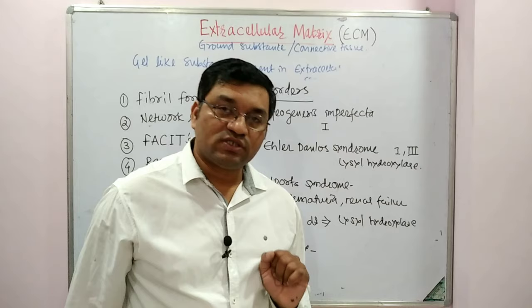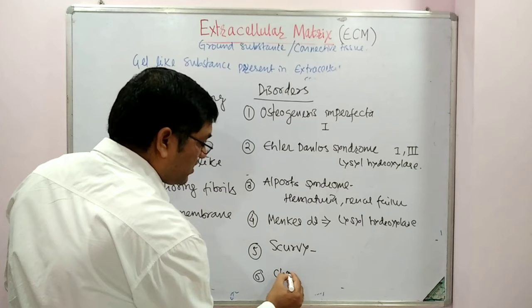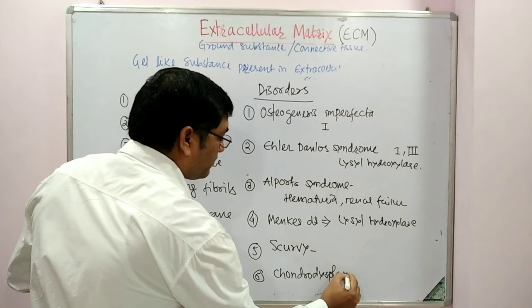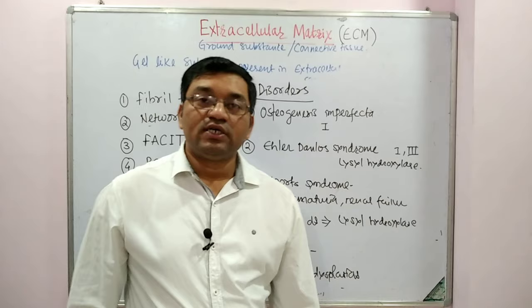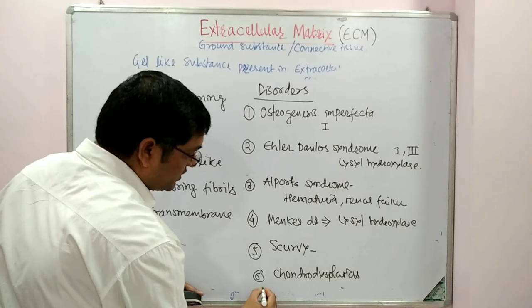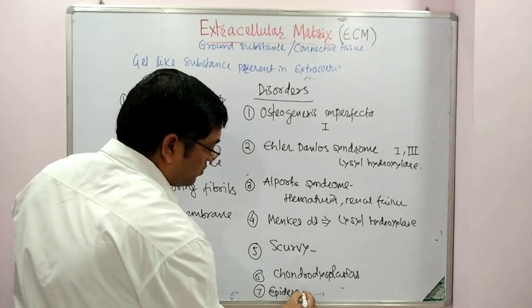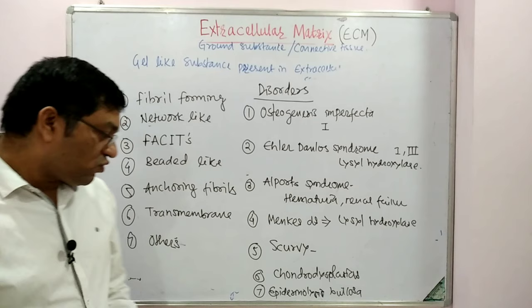The sixth disorder is chondrodysplasia. It results in dwarfism and is due to mutation in the gene coding for Type II collagen. The next disorder related with collagen synthesis is epidermolysis bullosa — it involves easy rupture and blister formation with minor trauma.